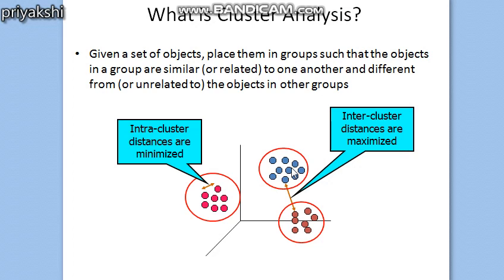It is believed that the greater the similarity or homogeneity within a group and the greater the difference between groups, the better or more distinct the clustering is. To have a better cluster, we should try to minimize the distance within a group — that means intra-cluster distances should be minimized. When intra-cluster distances are minimized, homogeneity or similarity will be increased. But we also have to increase the inter-cluster distances, meaning we have to maximize the inter-cluster distance, because the clusters are not related to each other.